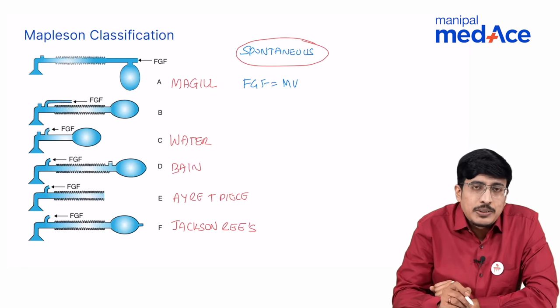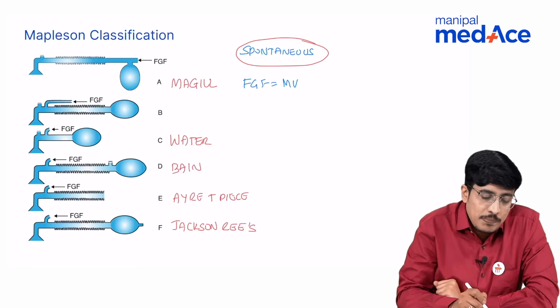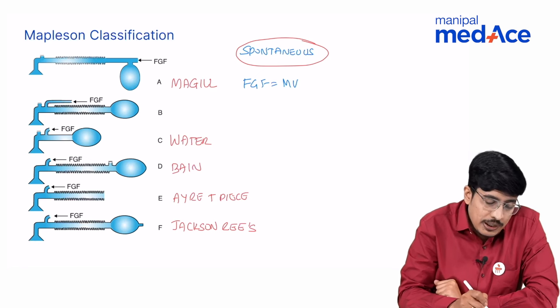Type B is similar to type A and it is no more in use. Only difference between type A and type B is location of the fresh gas flow tubing. It is located closer in case of type B.